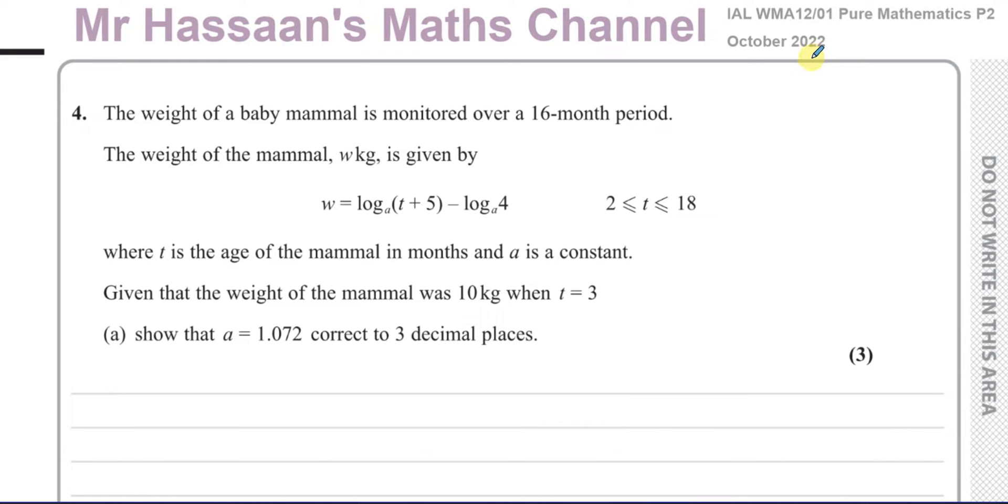This question here seems to be about logarithms. It says the weight of a baby mammal is monitored over a 16-month period. The weight of the mammal, w kilograms, is given by the equation w equals log base a of (t+5) minus log base a of 4, where t is between 2 and 18. And t is the age of the mammal in months and a is a constant.